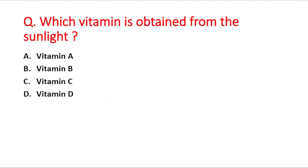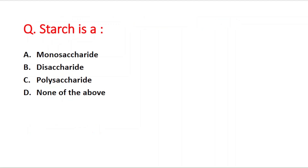Next question: which vitamin is obtained from sunlight? Option A vitamin A, B vitamin B, C vitamin C, D vitamin D. Vitamin D is obtained from sunlight. Next question: starch is a — option A monosaccharide, B disaccharide, C polysaccharide, D none of the above. The right answer is option C — polysaccharide.